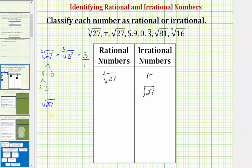Next we have 5.9. Well, 5.9 is a terminating decimal, which makes it rational. We could also write 5.9 in the form of A over B, where A and B are integers. Because 5.9 is equal to five and nine tenths, which would be equal to ten times five is fifty, plus nine. So five and nine tenths is equal to fifty-nine tenths, again verifying 5.9 is rational.